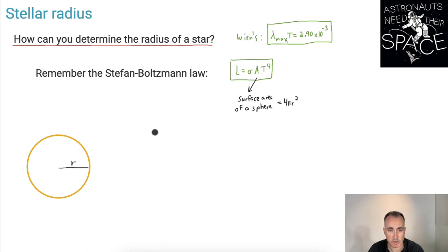So that means then that we could say that L equals sigma times, and actually instead of sigma, I'll just put the 4 pi r squared first. So 4 pi r squared times sigma times T to the fourth. This is the key one that we're going to use.